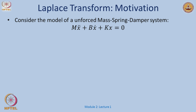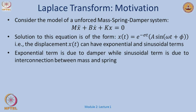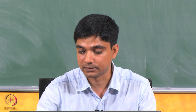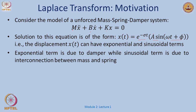What is the relation between what we have learned and what we are trying to do now? We discuss modeling a mass-spring-damper system: mẍ + bẋ + kx = 0. Solving this equation gives a term e^(−σt) and a sinusoidal term. The values of σ, A, ω, and φ depend on the parameters m, b, and k.